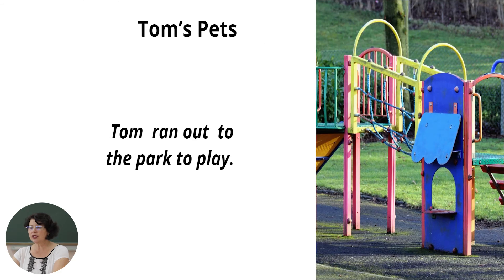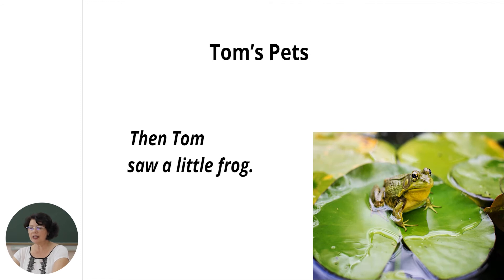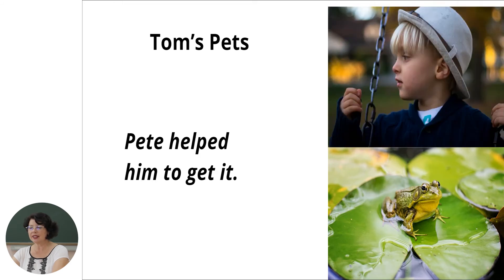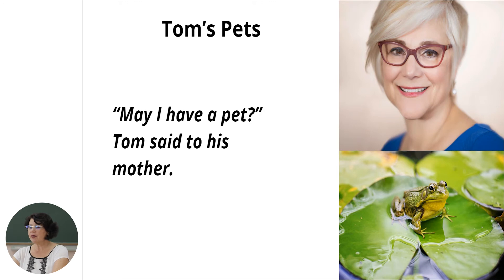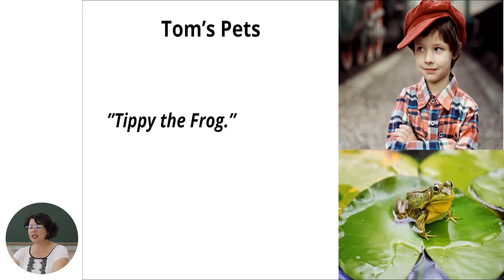Tom ran out to the park to play. He played in the park with Pete. Pete was his friend. Then Tom saw a little frog. Tom wanted that frog for a pet. Pete helped him to get it. They got a box and put the frog into it. 'May I have a pet?' Tom said to his mother. 'I am going to name my pet Tippi,' Tom said. 'Tippi the frog.'